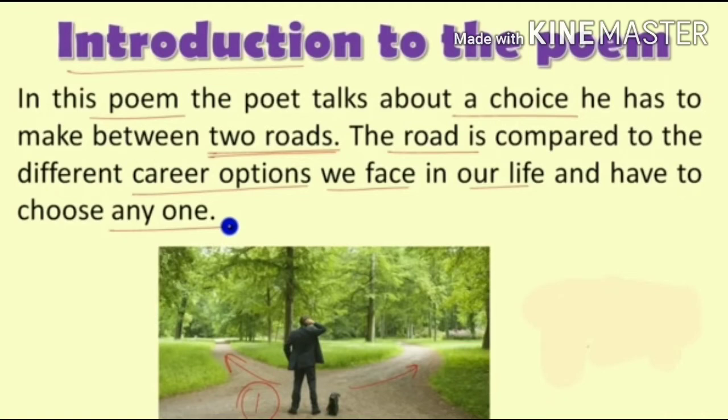Being a student, you can easily relate to this poem because in a student's life also, students come across many such options or opportunities. For example, after passing class 12, students have so many opportunities, choices, and options — they have to select one in terms of their career, studies, job, and so on. So everyone has to decide at a certain point of time which way to go or which path to choose. This poem talks about such opportunities, choices, and complexities.